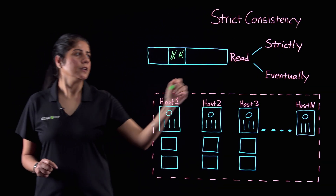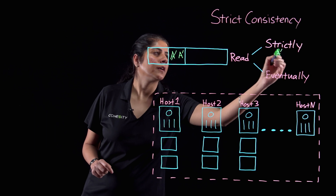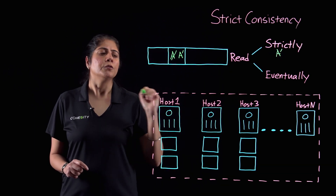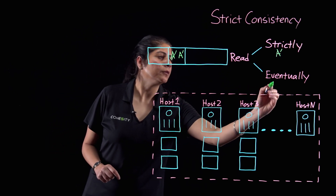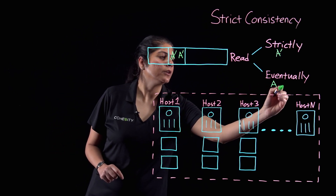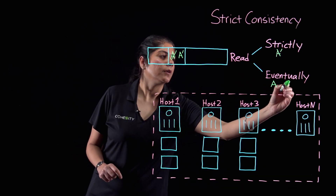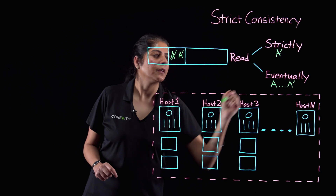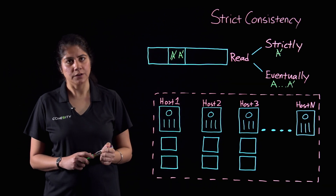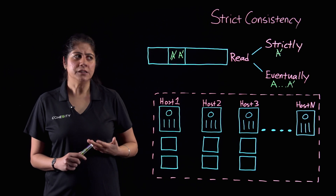if you were to read this data segment, you will get the value A prime. But in an eventually consistent storage system, for some time you may still get the value A, and only eventually — if there was no update in between — you will get the value A prime. Most of the traditional storage systems are strictly consistent.